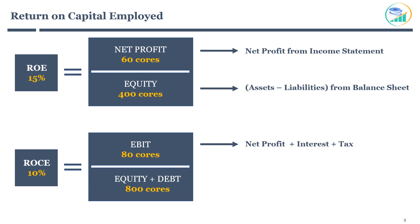Let's look at the denominator now. It considers the company's equity and long-term debt used to generate profit. In this case, ROCE will be 10%. In short, ROCE is the return made on overall capital employed, which includes both equity and long-term debt.